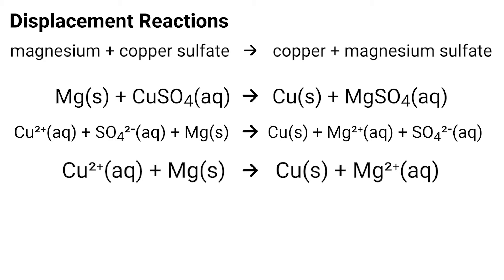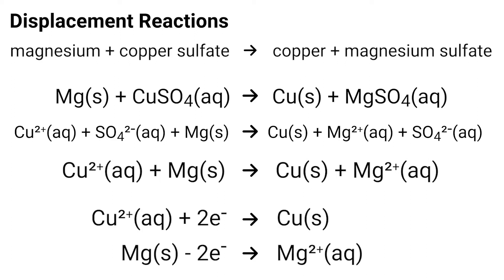Once we have an ionic equation we can take it one step further and look at half equations. These look at how the electrons behave. We can see here that there are only two different chemicals involved and we can split our equation in half to make half equations. On the screen now are the half equations for copper and magnesium. We can see that copper ends up gaining electrons, which means that copper has been reduced. We can see that magnesium loses electrons and therefore it has been oxidised.